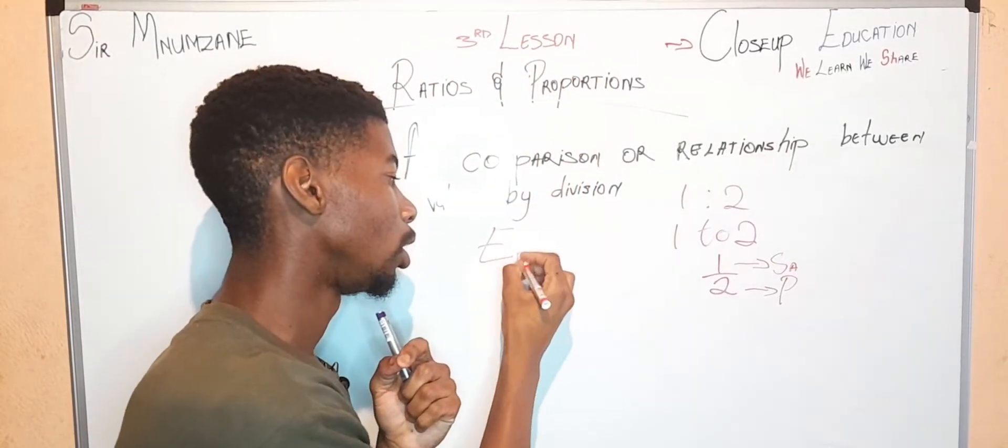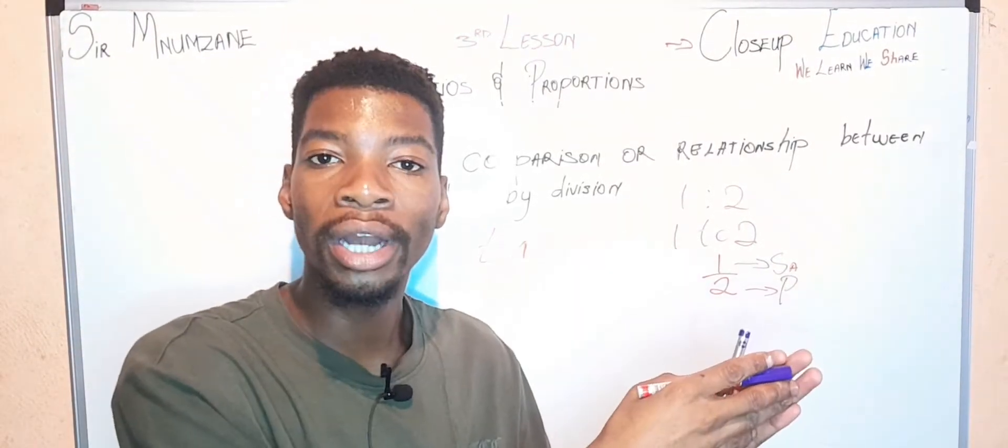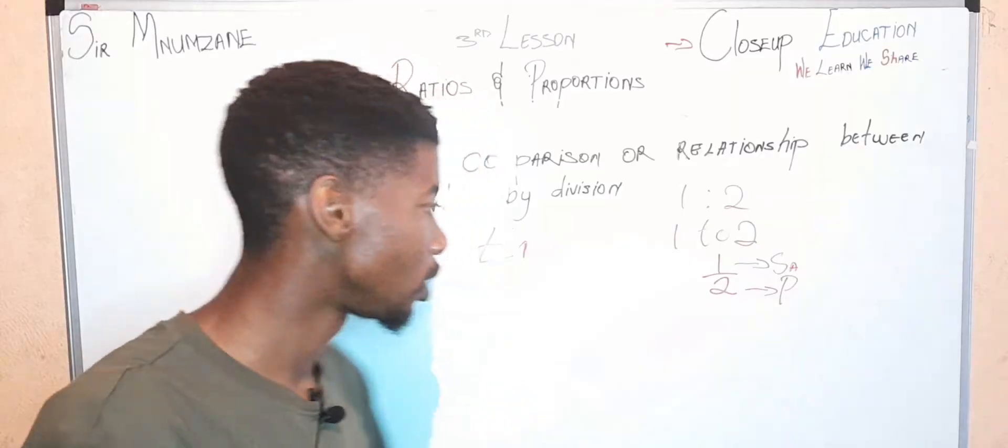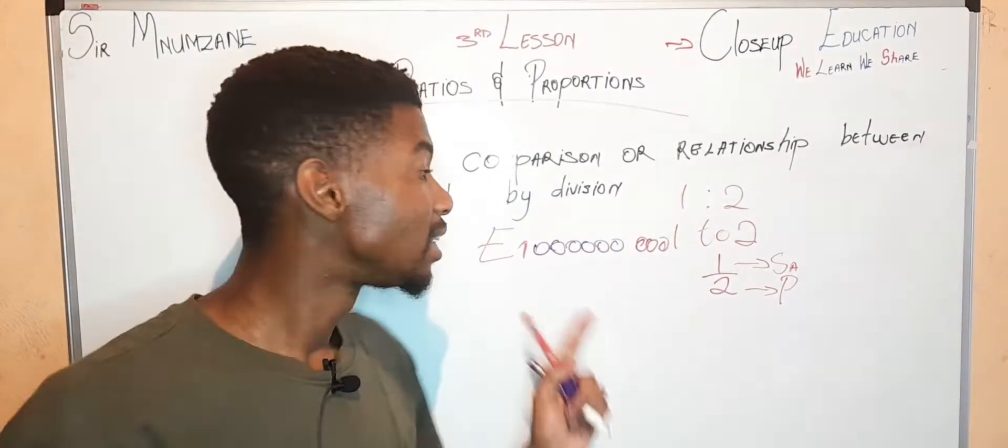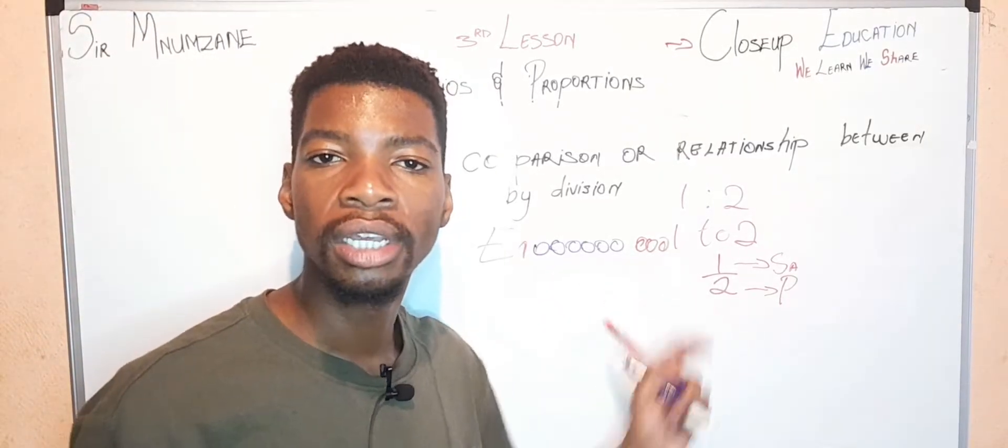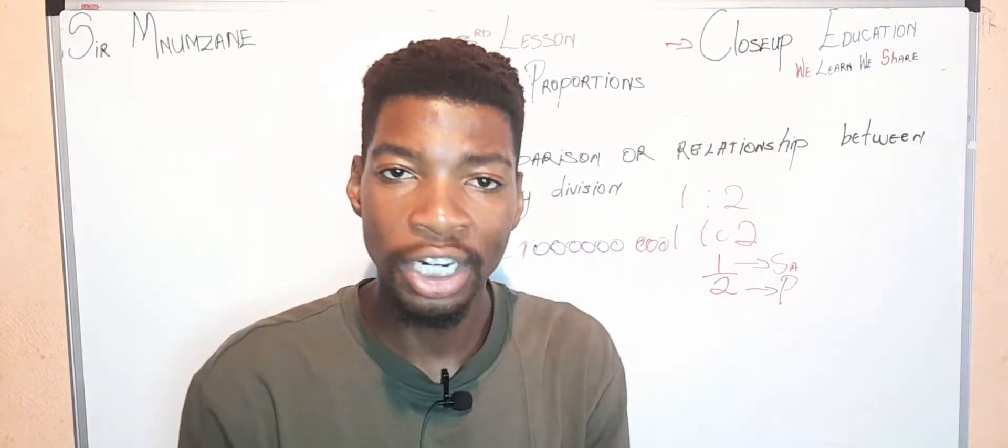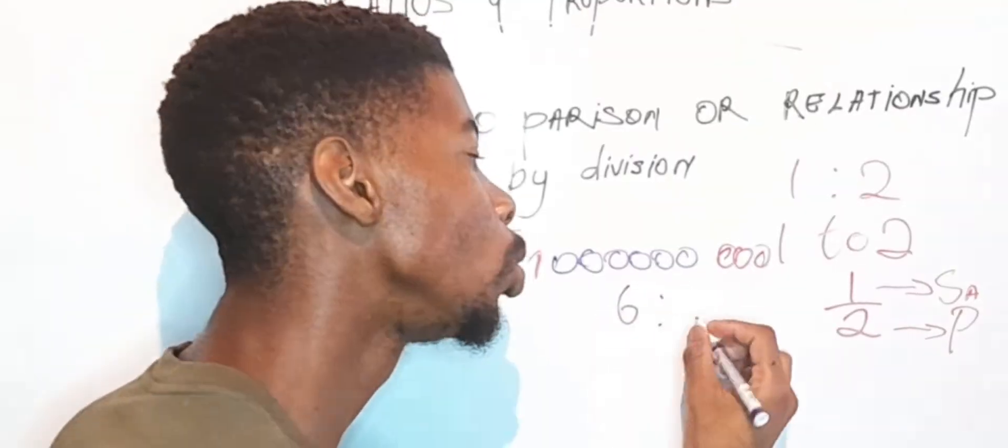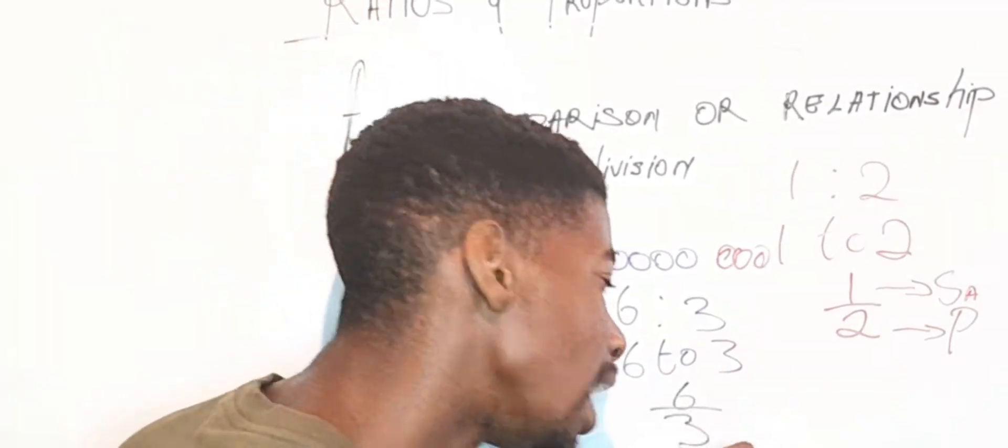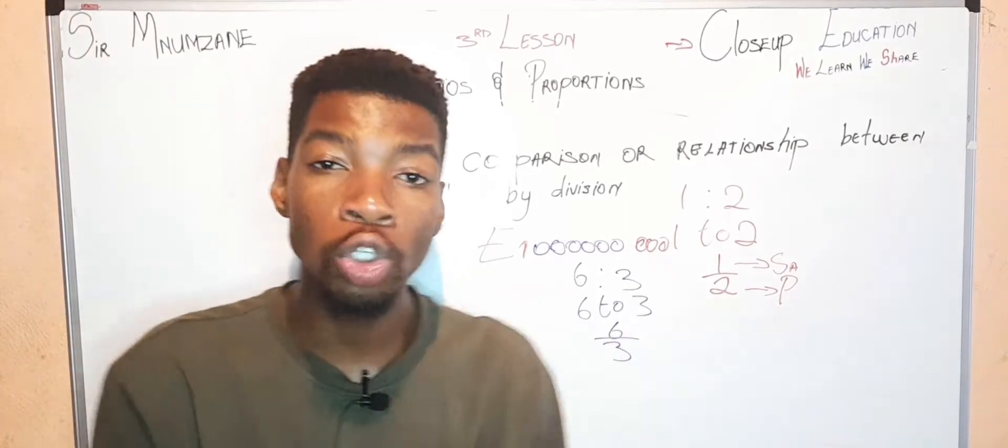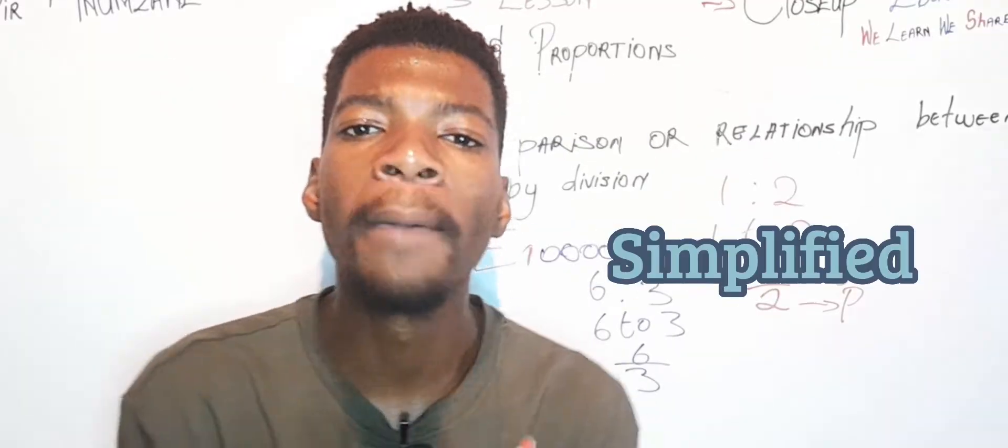Example number one: Let's say you are comparing six oranges to three apples. Write it in a ratio form. You just say 6:3, or 6 to 3. But because a ratio can also be expressed in a fraction, it means it should also be simplified.